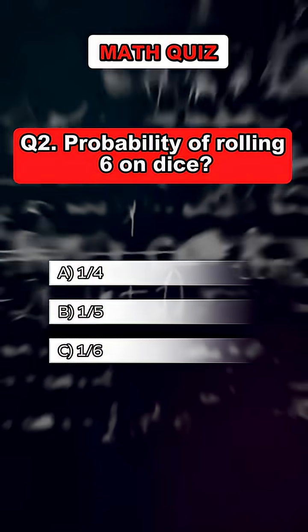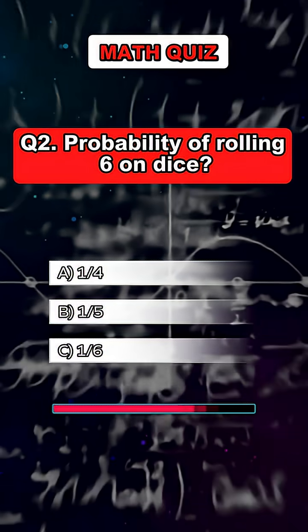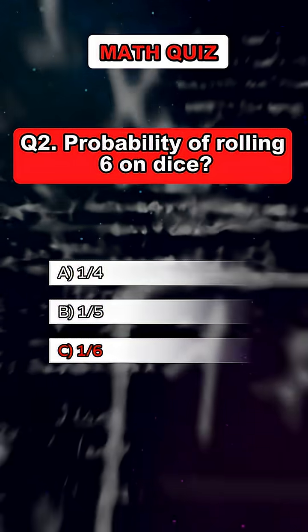Question 2. Probability of rolling 6 on dice. Answer: C, 1 sixth.